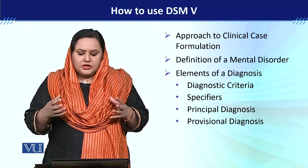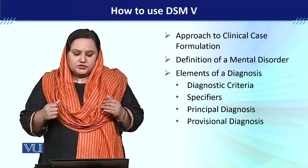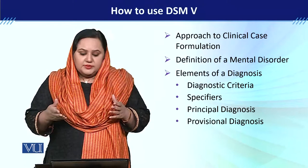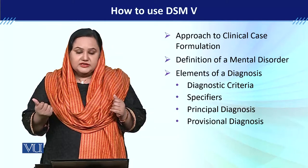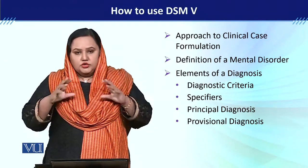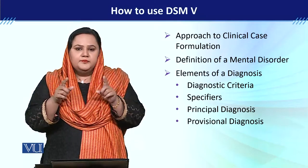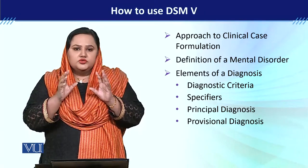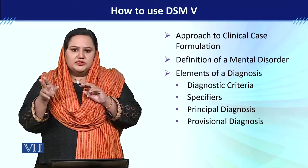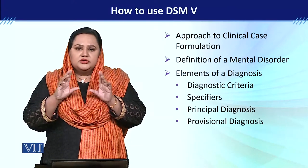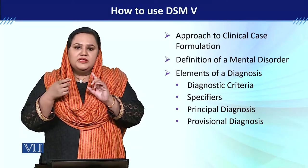There are four to five elements to keep in mind when making a diagnosis using DSM-5: diagnostic criteria, specifier, principal diagnosis, and provisional diagnosis. Diagnostic criteria means that DSM-5 explains that particular types of symptoms must occur for a specific period of time — either one month, two weeks, or one week. Only when that diagnostic criteria is fulfilled can you say that the child or person has a certain specific disorder.